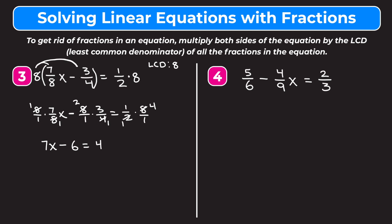Now we can solve this pretty easily. We're going to add 6 to both sides. On the left we're left with 7x. On the right, 4 plus 6 is 10. Finally, divide both sides by 7 to get that x equals 10/7.